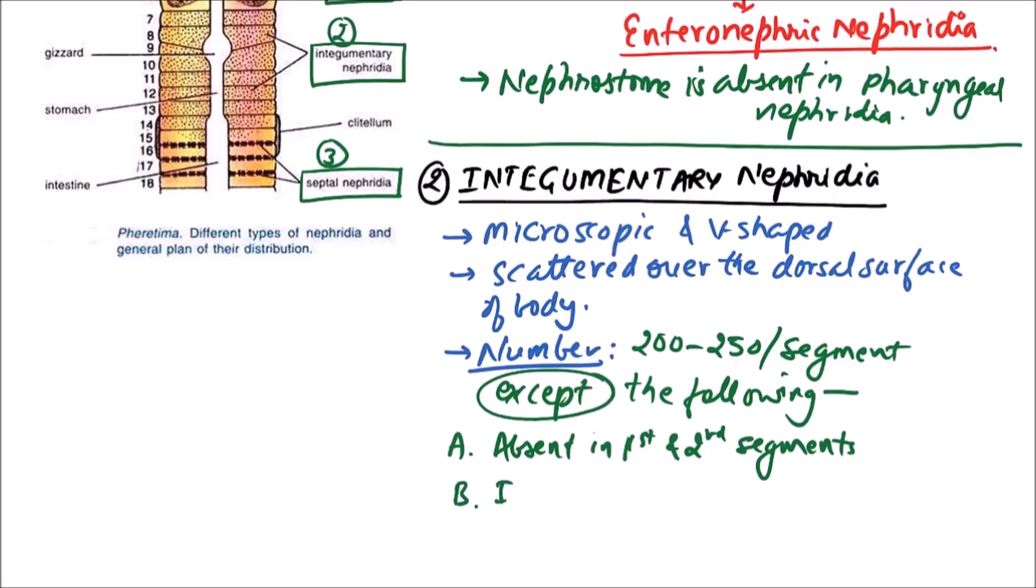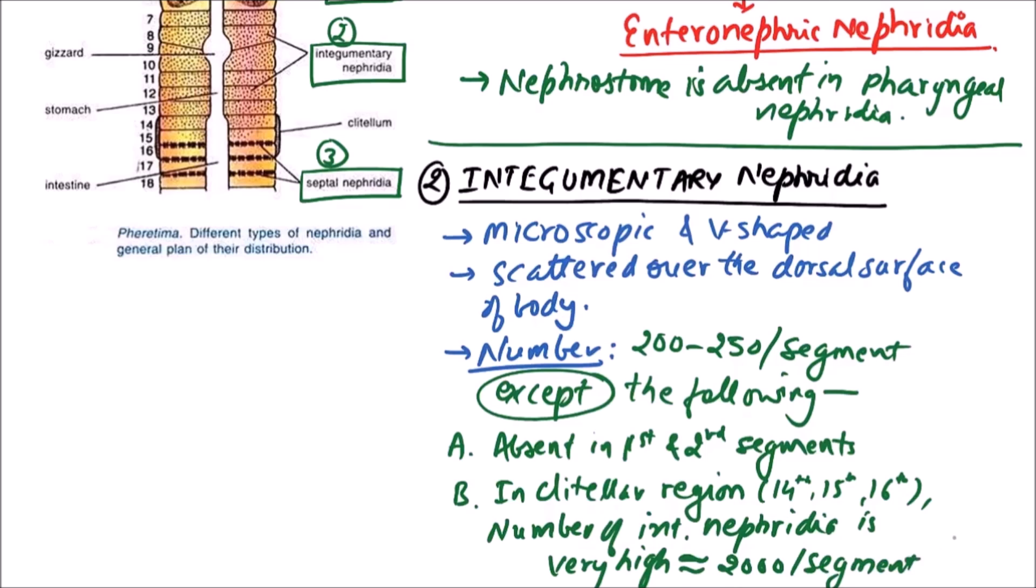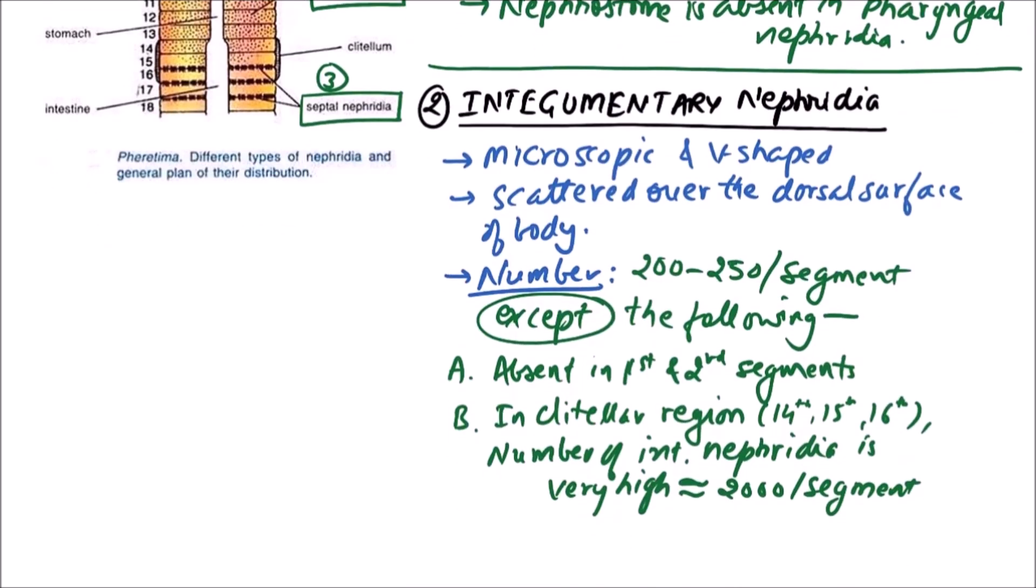B. In clitellar region. In earthworm, clitellar region is in 14th, 15th and 16th segment. Number of integumentary nephridia is very high, that is approximately 2000 per segment. That is why this region of clitellum is also known as forest of nephridia.